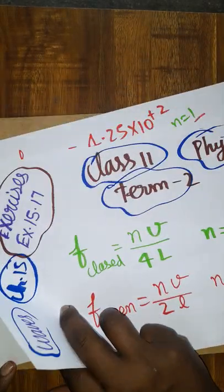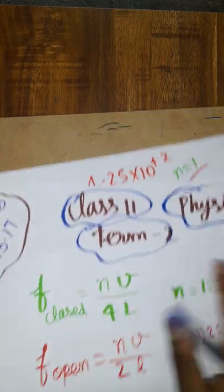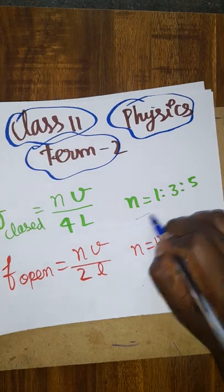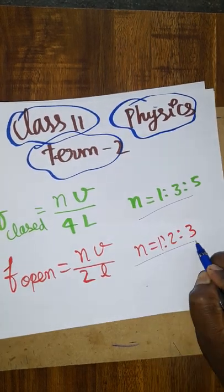Actually, they are given a frequency of 425 hertz. They asked about open organ pipe and closed organ pipe which is going to get the sound. This is the ratio of closed organ pipe. This is the ratio of open organ pipe.